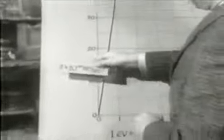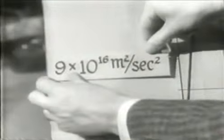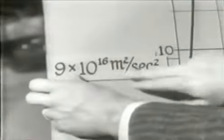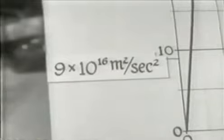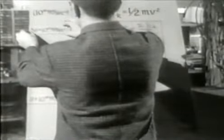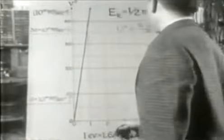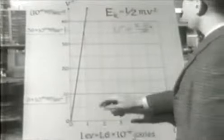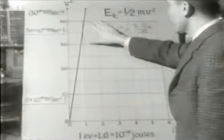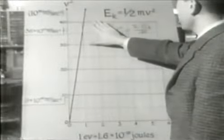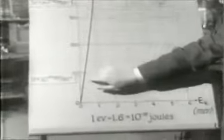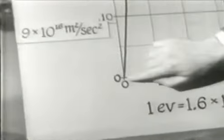Il quadrato della velocità della luce, per esempio, sta qui: nove per dieci alla sedici metri al quadrato per secondo quadrato. Il quadrato del doppio della velocità della luce è qui. Secondo la relazione di Newton, quando abbiamo milioni di elettron volt, ci aspettiamo velocità che arrivano qua. Queste velocità sono enormi in confronto alla velocità della Terra in movimento intorno al Sole, che dovremmo indicare circa qua giù, del tutto invisibile su questa scala.